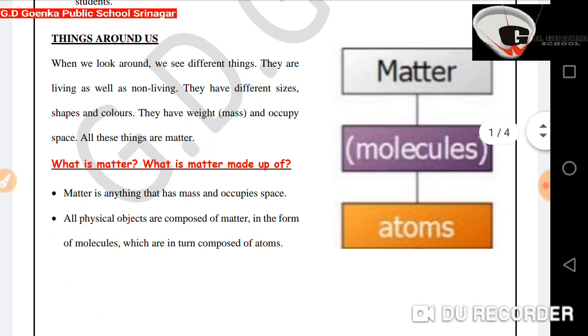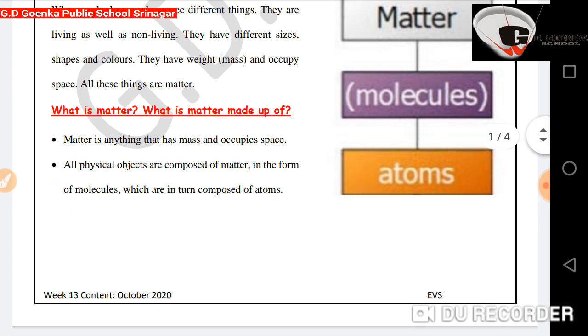Things Around Us. When we look around, we see different things. They are living as well as non-living. They have different sizes, shapes and colors. They have weight, mass, and occupy space. All these things are matter.